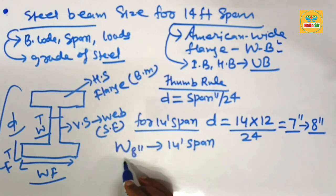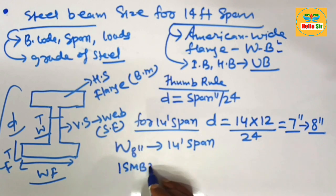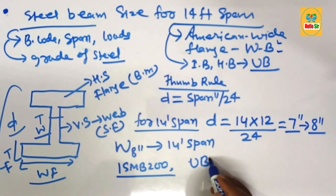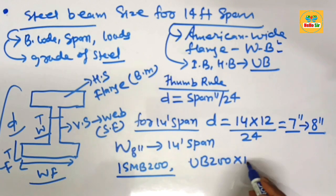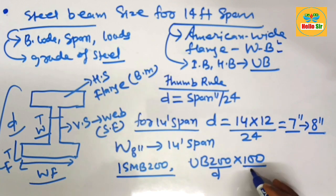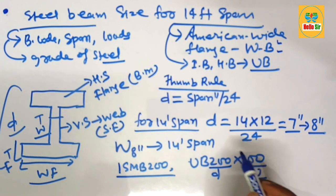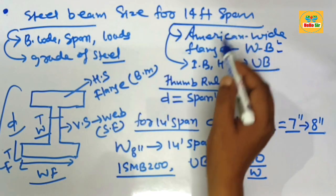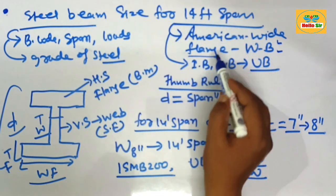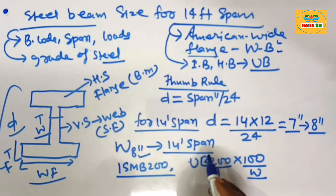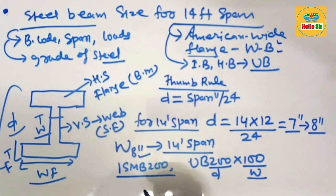As per other practices, you need ISMB 200 or UB 200×100 — where 200 is the depth section and 100 is the width section of the beam. So the answer to 'what size steel beam do I need for a 14-foot span?' is an American Wide Flange W-beam with an 8-inch depth section.